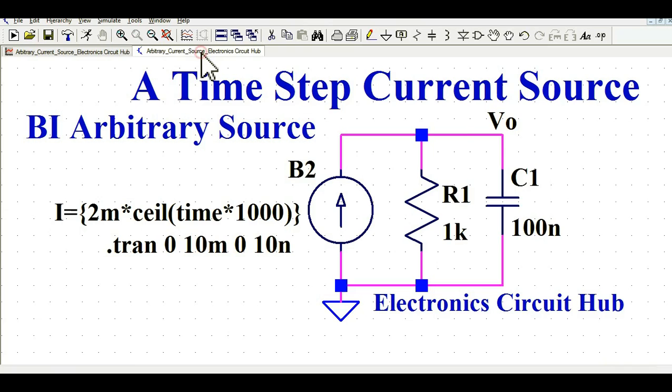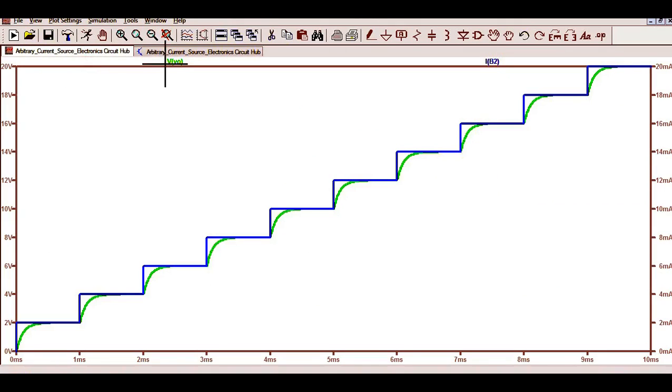So what happens is now I'm gonna show you the output voltage. So if you see here, your output voltage is overlapping with the current source input current source, and you can see here the output voltage from 0 volt to 2 volt and it rolls up to 20 volt.